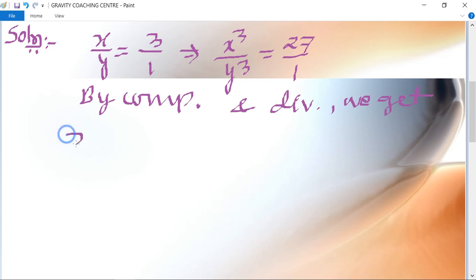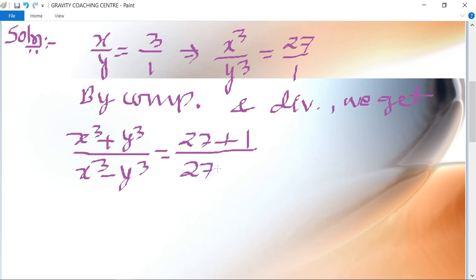(x³ + y³)/(x³ - y³) = (27 + 1)/(27 - 1) = 28/26.